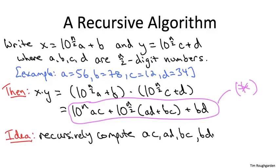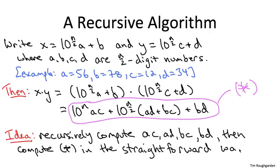And then, once our four recursive calls come back to us with the answer, we can formulate the rest of expression star in the obvious way. We just pad a times c with n zeros at the end. We add up ad and bc using the grade school algorithm and pad the result with n over two zeros, and then we just sum up these three terms again using the grade school addition algorithm.